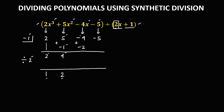Then add: negative 4 plus negative 2, that's negative 6. Then divide: negative 6 divided by 2, that's negative 3. Then multiply: negative 3 times negative 1, that's positive 3. Then add: negative 5 plus positive 3, that's negative 2. For this last number, there is no need to divide by 2 because this one is the remainder.